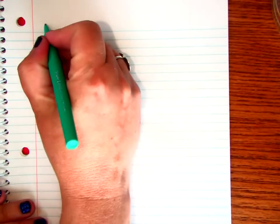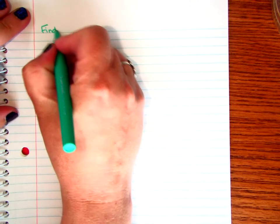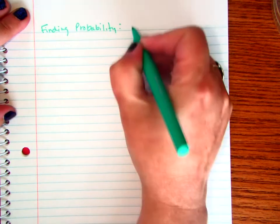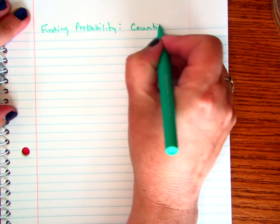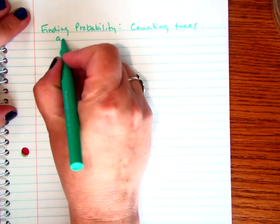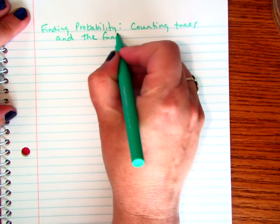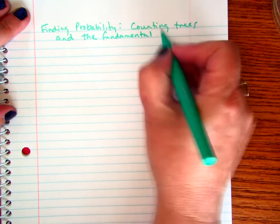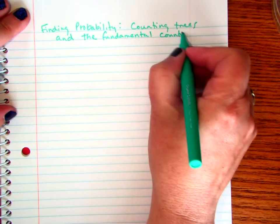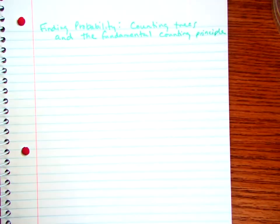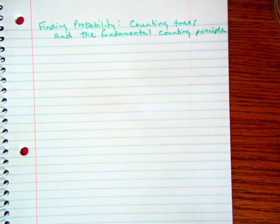Today we're going to look at counting trees, which is a new way of finding probability. We're going to look at counting trees and what's called the fundamental counting principle, although I'm not really concerned that you know the name. I just realized that if you're looking at things, you'll sometimes see that name, and it is kind of a common name.